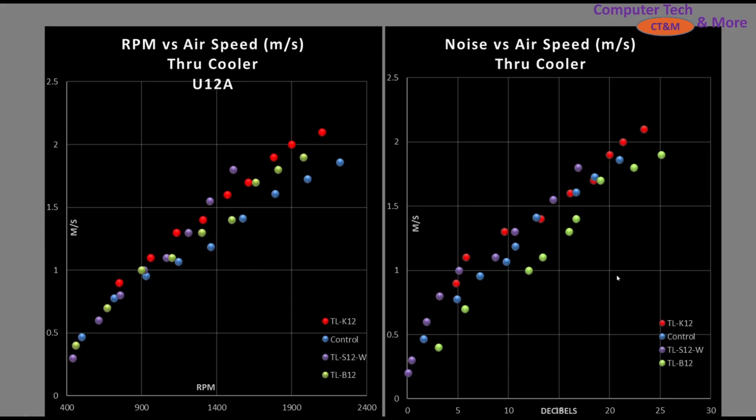Next is performance through my CPU air cooler, the Noctua U12A—a fairly high-density cooler, which is why I use it. I plan on acquiring a radiator in the future, though it's currently outside the purchasing capability of this channel, made possible through support from patrons and viewers.